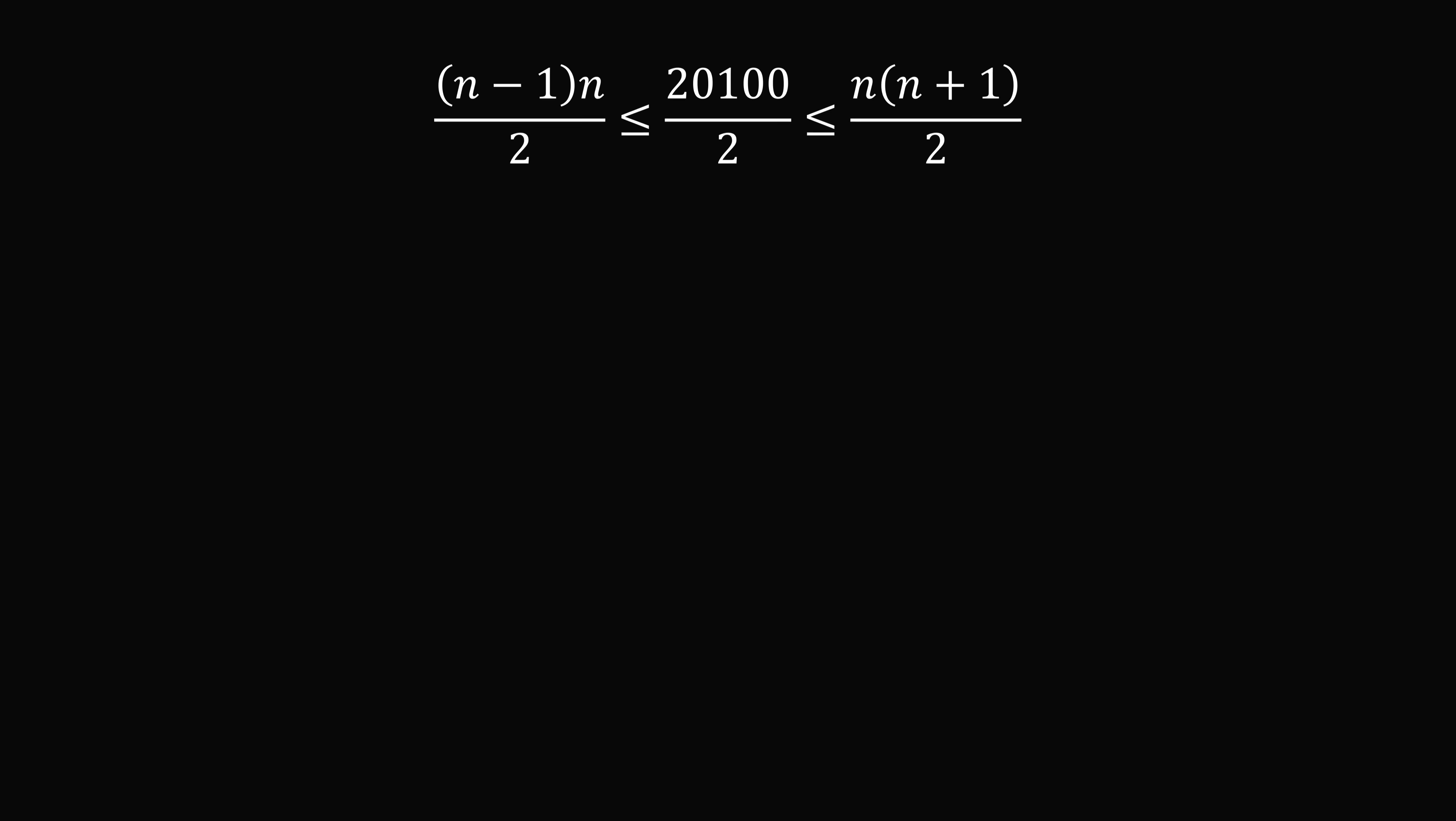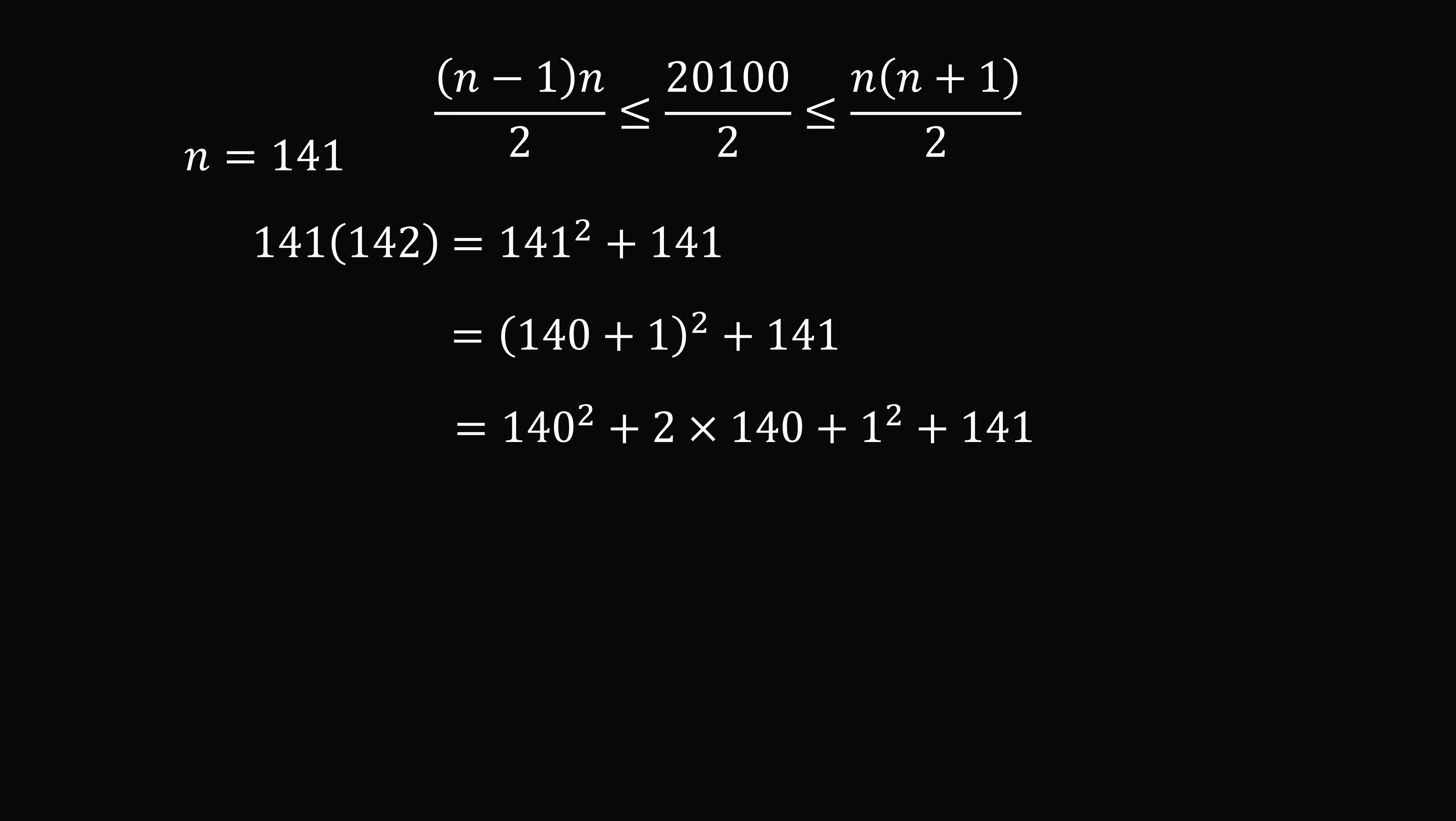Let's try n = 141. So we'll calculate 141 × 142. In that case, we have 141² + 141. 141 is equal to 140 + 1. So we square this, and we get 140² + 2 × 140 + 1² + 141. This equals 19,600 + 280 + 1 + 141, which all works out to be 20,022.